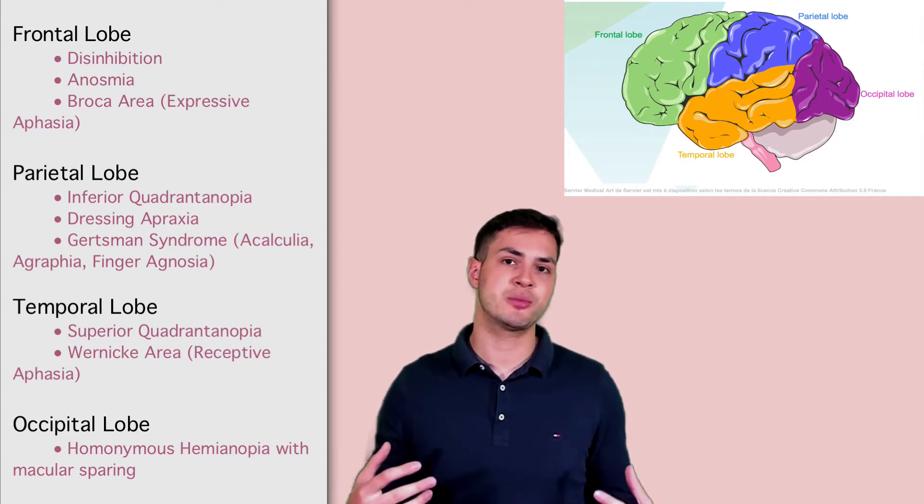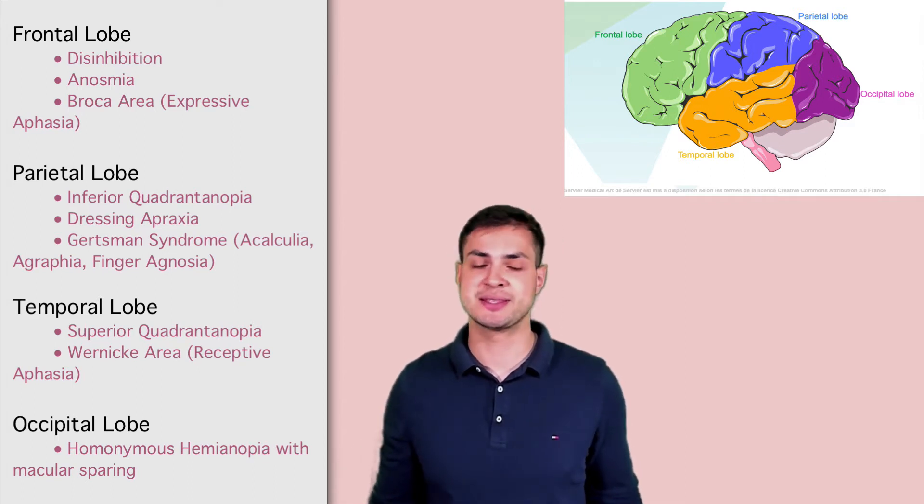And finally, the occipital lobe is where a homonymous hemianopia with macular sparing happens. So there you have it. These are the main things you want to know about each lobe because you may get asked in exams.